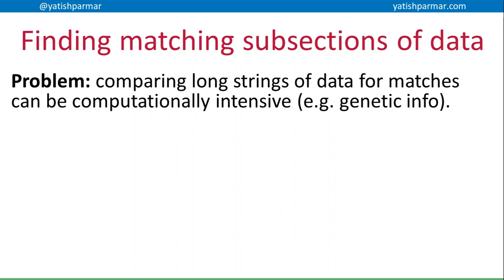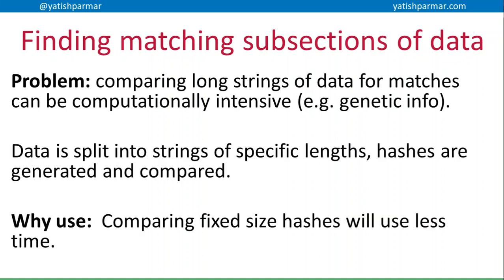Another use case: comparing substrings of data within a file — for example, genetic information. It's far quicker to split that data into strings of a fixed length, generate a hash for each of those substrings, and then compare the hashes to spot matches. Again, comparing hashes uses less time.